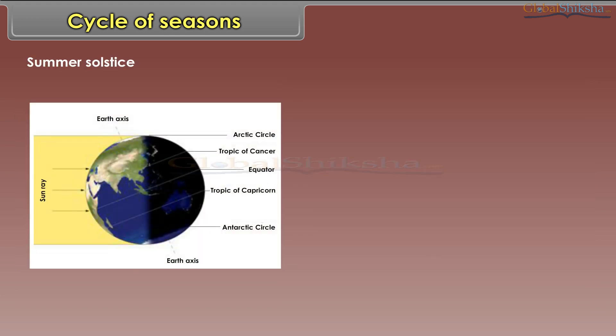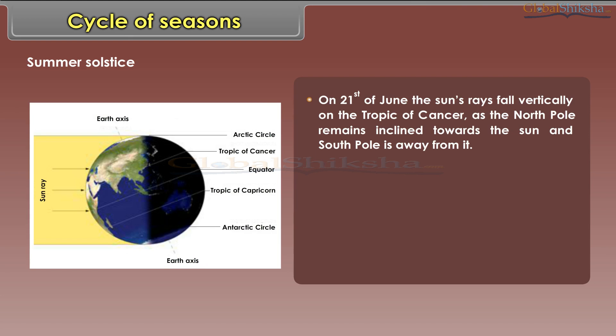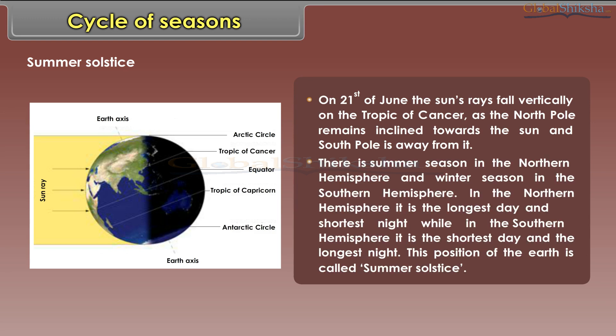On 21st June, the sun's rays fall vertically on the Tropic of Cancer as the north pole remains inclined towards the sun and the south pole is away from it. There is summer season in the northern hemisphere and winter season in the southern hemisphere. In the northern hemisphere, it is the longest day and shortest night, while in the southern hemisphere, it is the shortest day and the longest night. This position of the earth is called summer solstice.